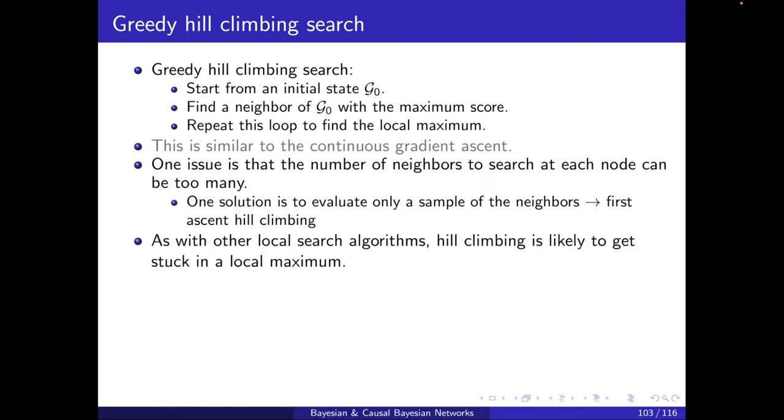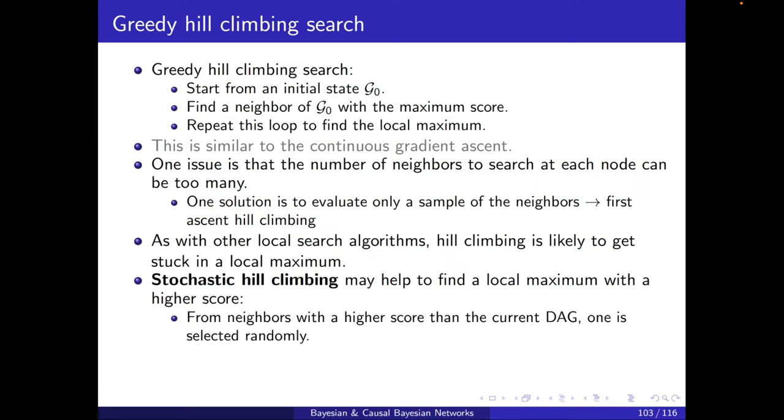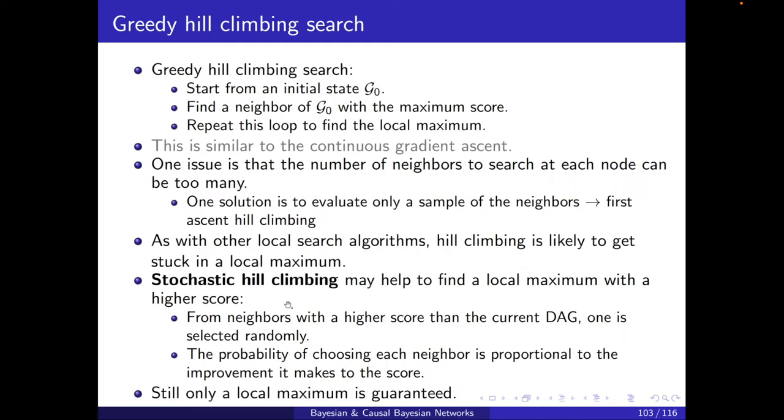I'm not going to go into the details of that. But one common issue, as with other local search algorithms, is that the hill climbing is likely to get stuck in a local maximum. Stochastic hill climbing may help to find a local maximum with a higher score. And the idea is that from neighbors with a higher score than the current DAG, one is selected randomly. The probability of choosing each neighbor is proportional to the improvement it makes to the score. This may result in a local maximum with a higher score, but still, only a local maximum is guaranteed.